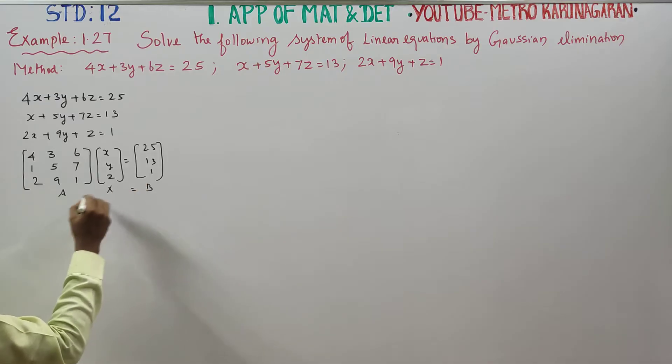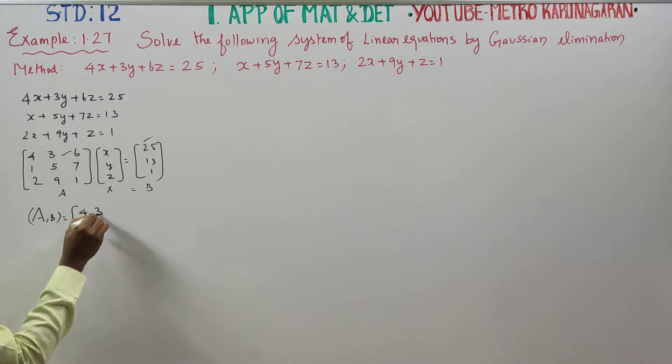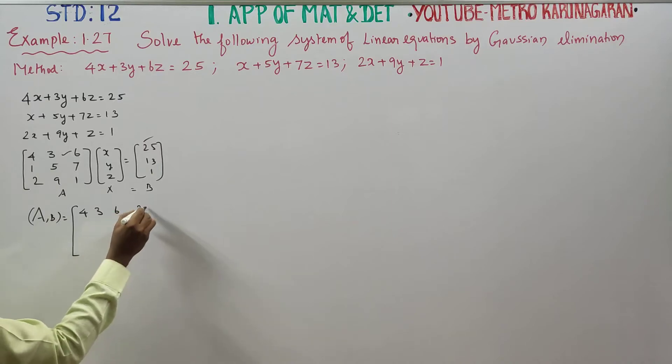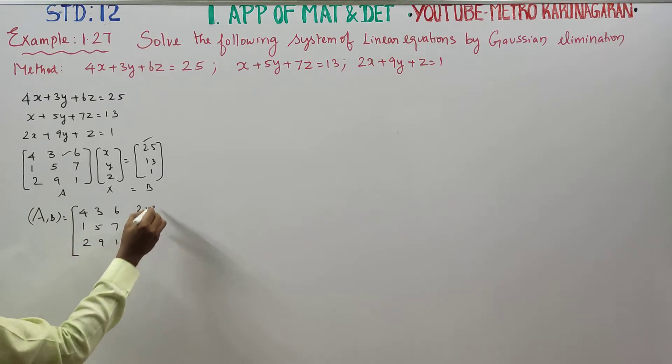In the augmented matrix, you mix the matrix A and B. The matrix is 4, 3, 6 colon 25, 1, 5, 7 colon 13, and 2, 9, 1 colon 1.